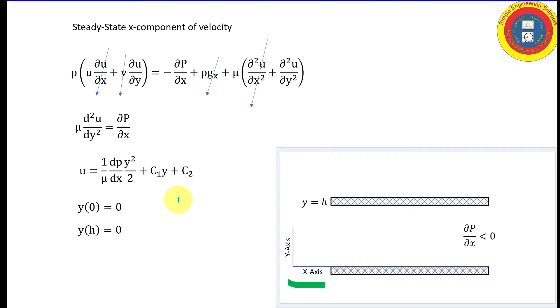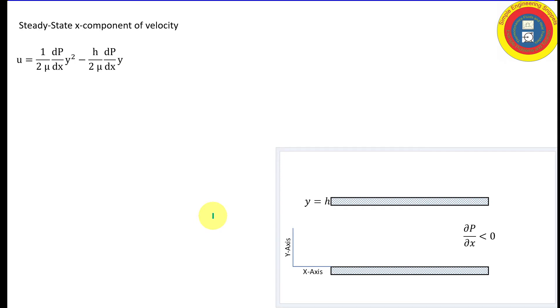And now let's list our boundary conditions. Notice that the velocity is equal to zero at the upper surface at y is equal to h, and the lower surface at y is equal to zero. And I can go ahead and solve to achieve an equation for the x component of velocity as a function of y.